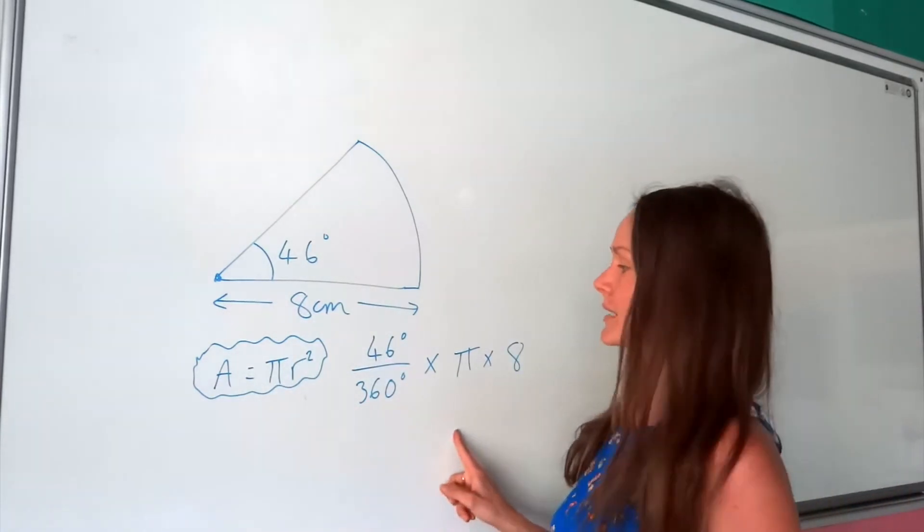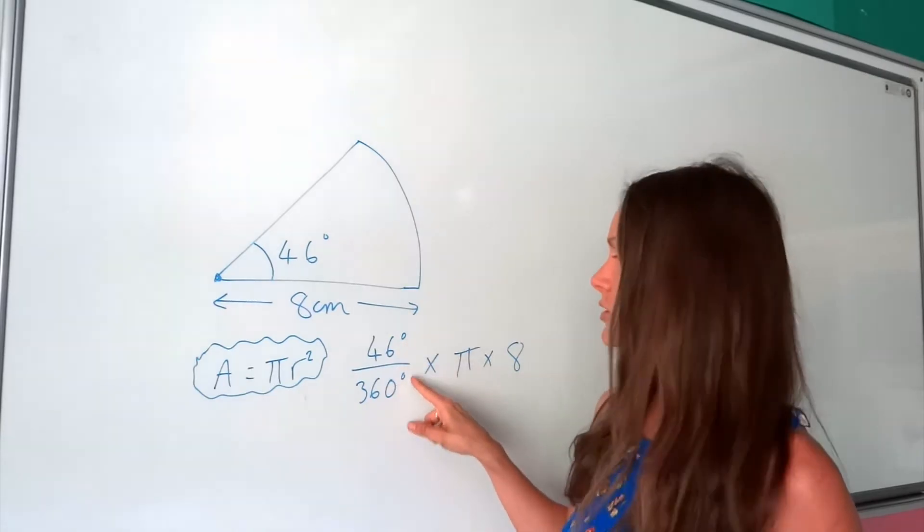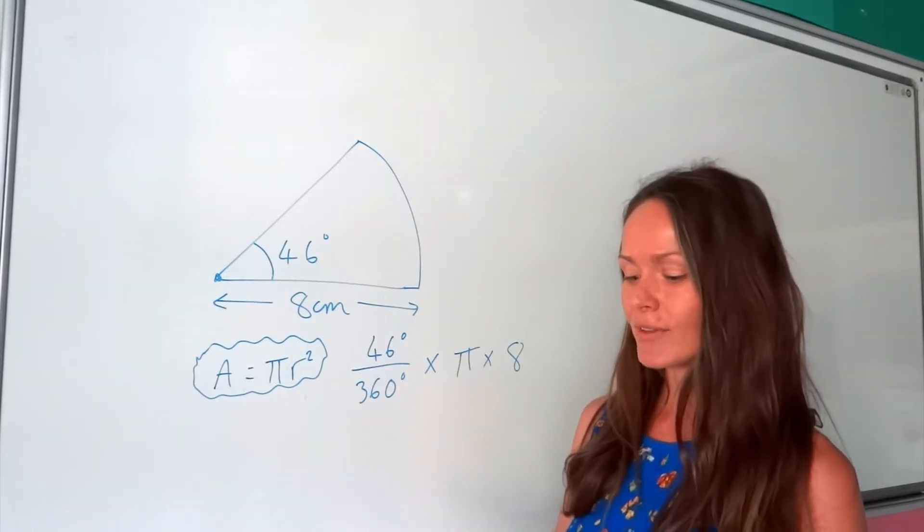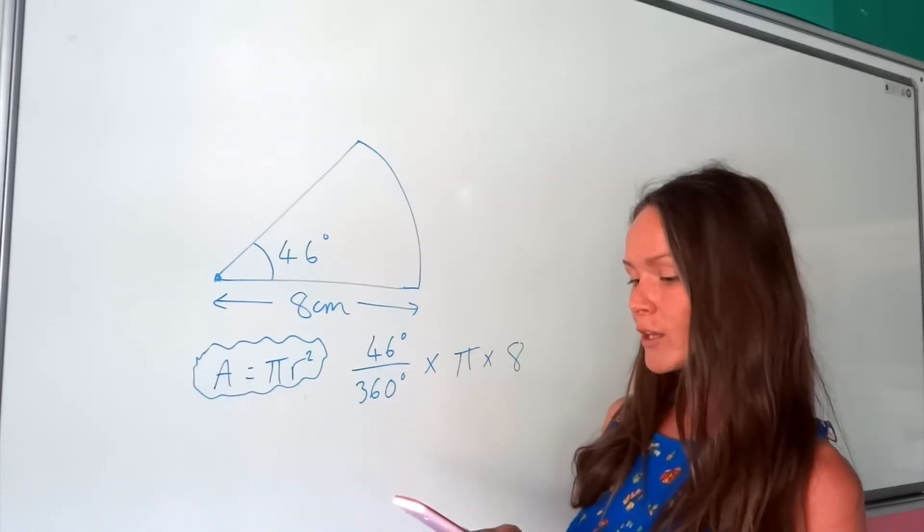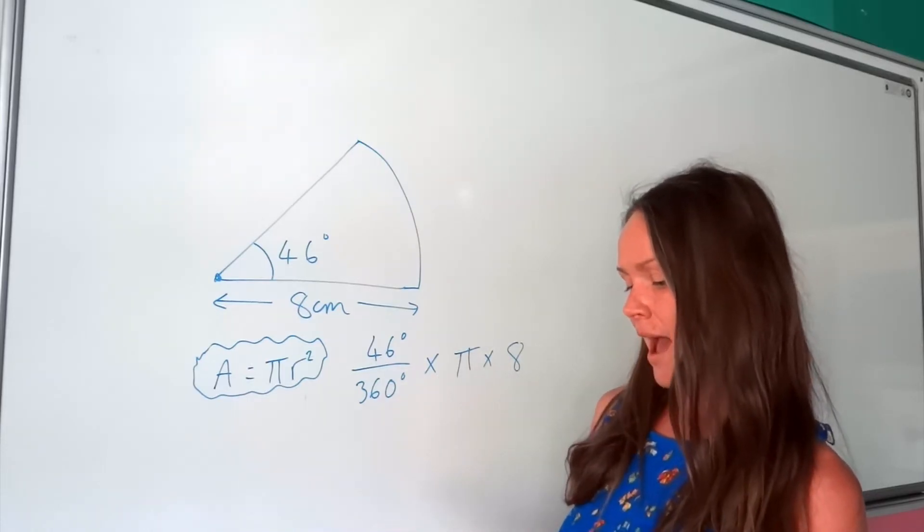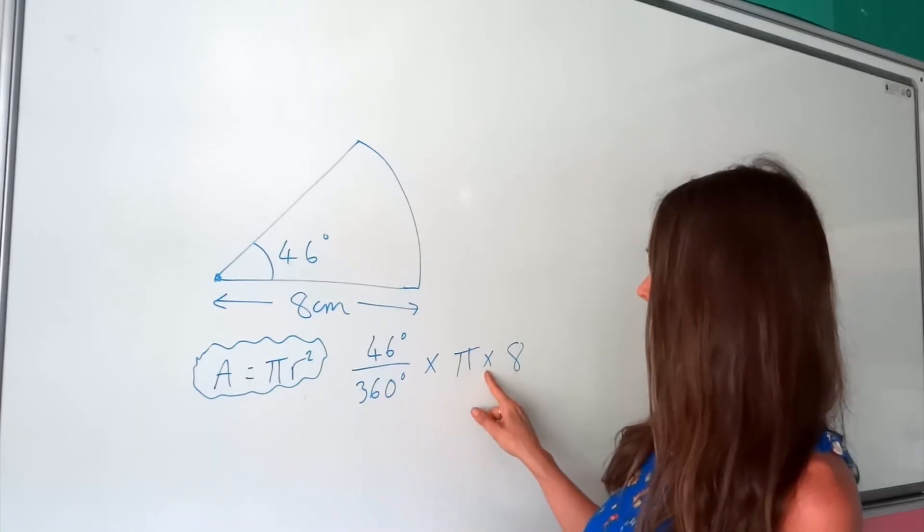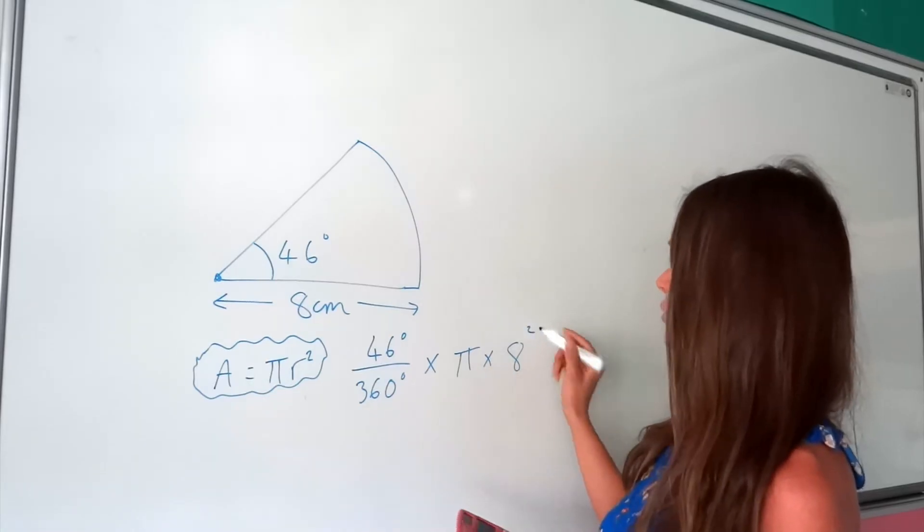So when you put that in the calculator, don't worry about writing in the degrees, you just write 46 over 360. I just wrote degrees here to show you where that came from. So write your fraction, and then multiply, find pi on your calculator, and times by 8 squared.